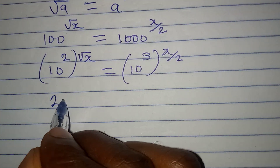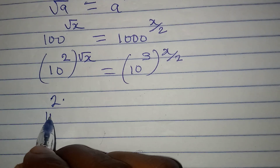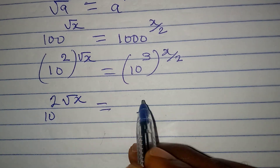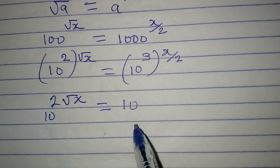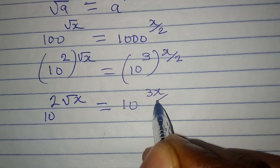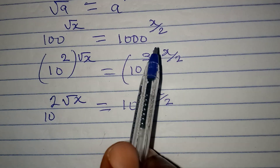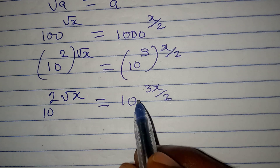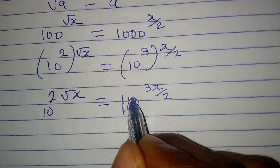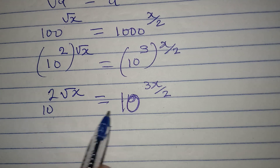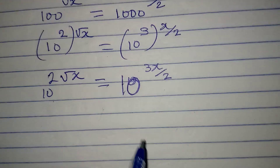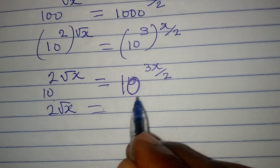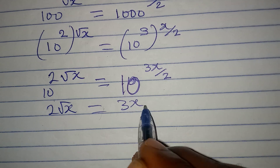From here we have 10 to the power of 2 root X, and that will be equal to 10 to the power of 3 times X over 2, which is 3X over 2. Since we have the same base, we can work with the powers, meaning that 2 root X is equal to 3X over 2.